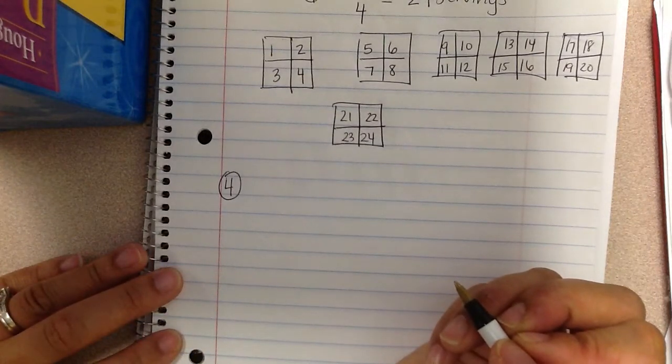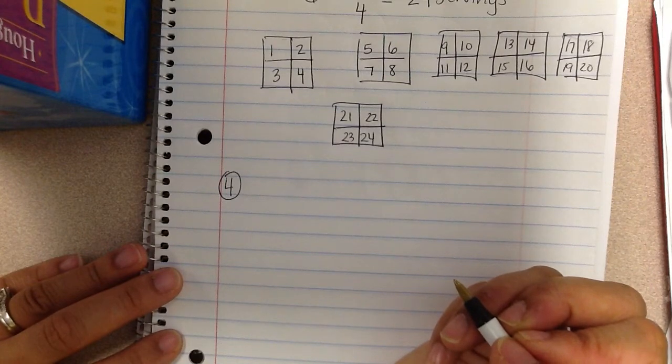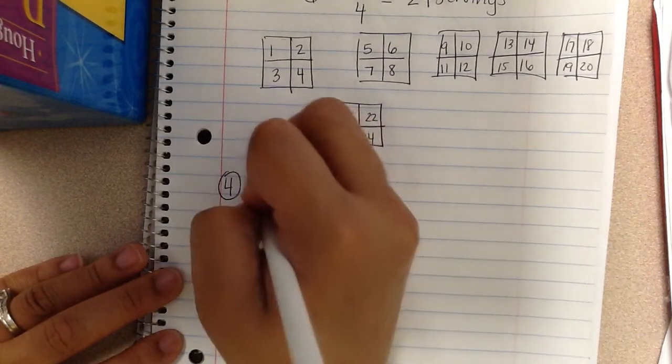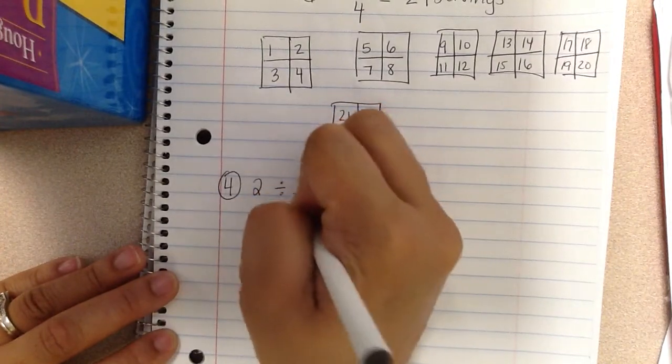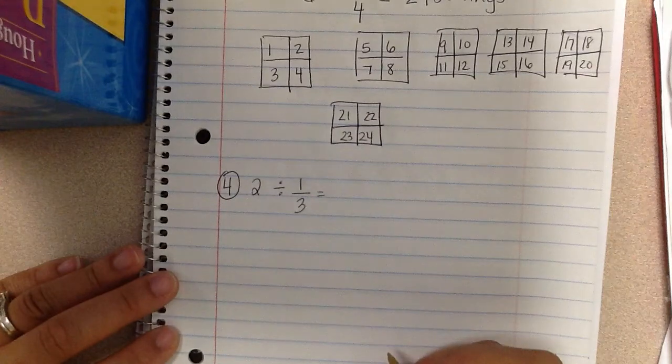Number four. Marcus has two fun dips that he got for his birthday. He wants to savor the fun dip so he only eats one third of the fun dip each day. How many days will it take him to eat the fun dip? Two packages divided by one third that he's going to eat each day will tell me how many days it'll take to eat the whole thing.